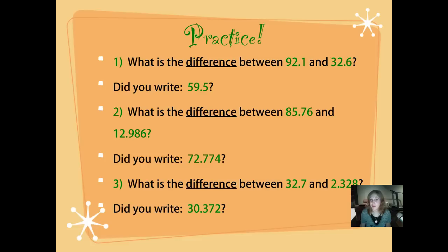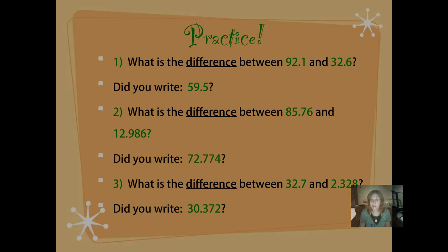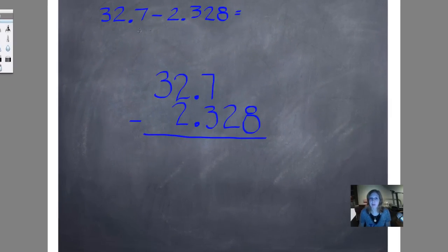Did you write 30 and 372 thousandths? Let's see how we worked it. When you are given a subtraction problem and they write it out horizontally like this, 32 and 7 tenths minus 2 and 328 thousandths, this first number here will always be the number on top. It doesn't have to be that way when you're adding, but when you're subtracting, it does have to be that way. This number will always be the number on the bottom that you're subtracting. So even though we've got a lot more digits in this number, it looks bigger. We know that it's not because we can compare and see that our whole numbers are very different. And this number is a lot larger. But it still has to be lined up correctly. Looks pretty crazy, doesn't it? To make it look a little less crazy to us, let's fill in those empty place value positions with zeros as placeholders. Now we can subtract.